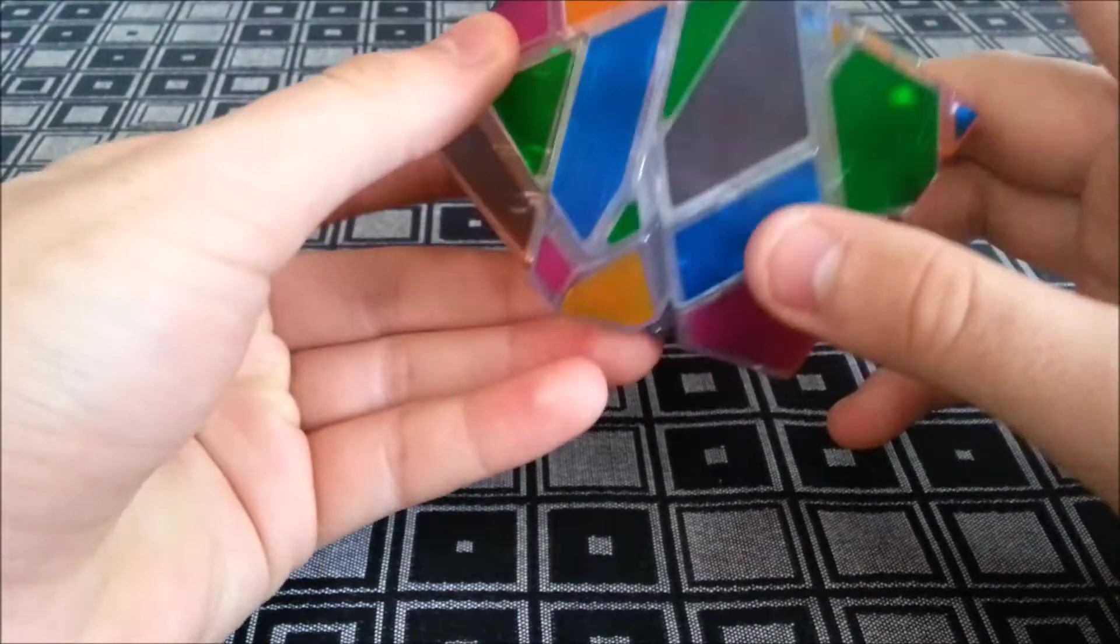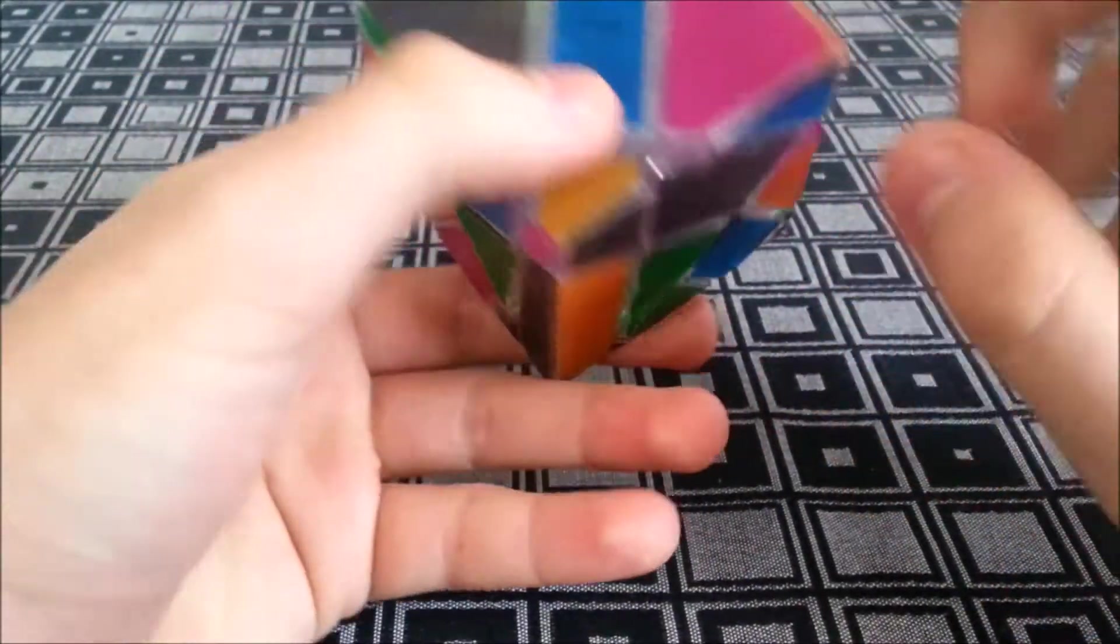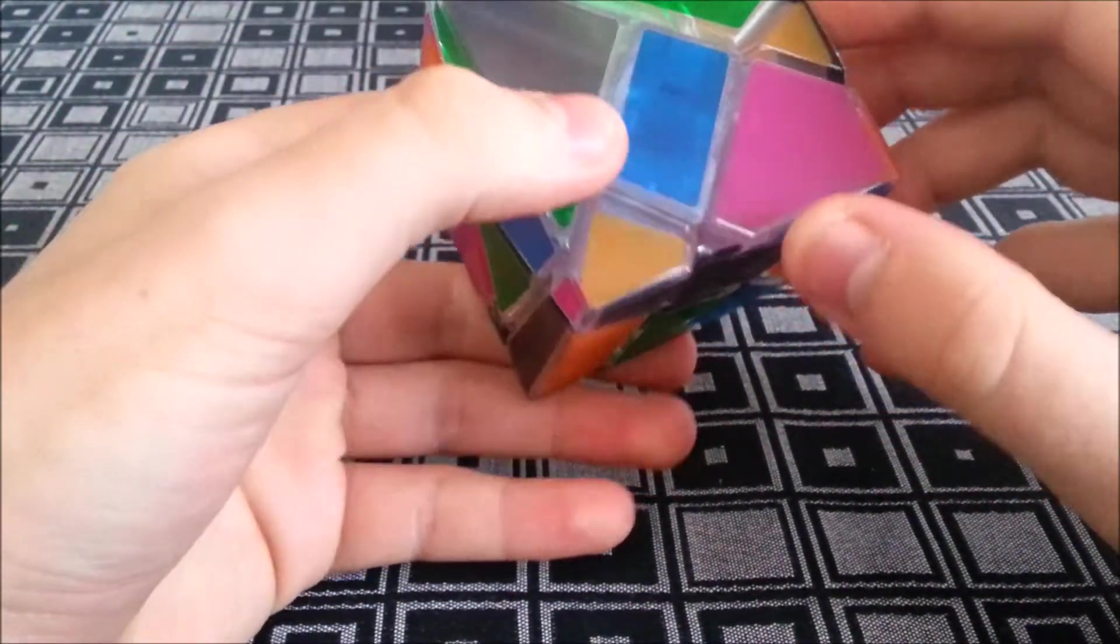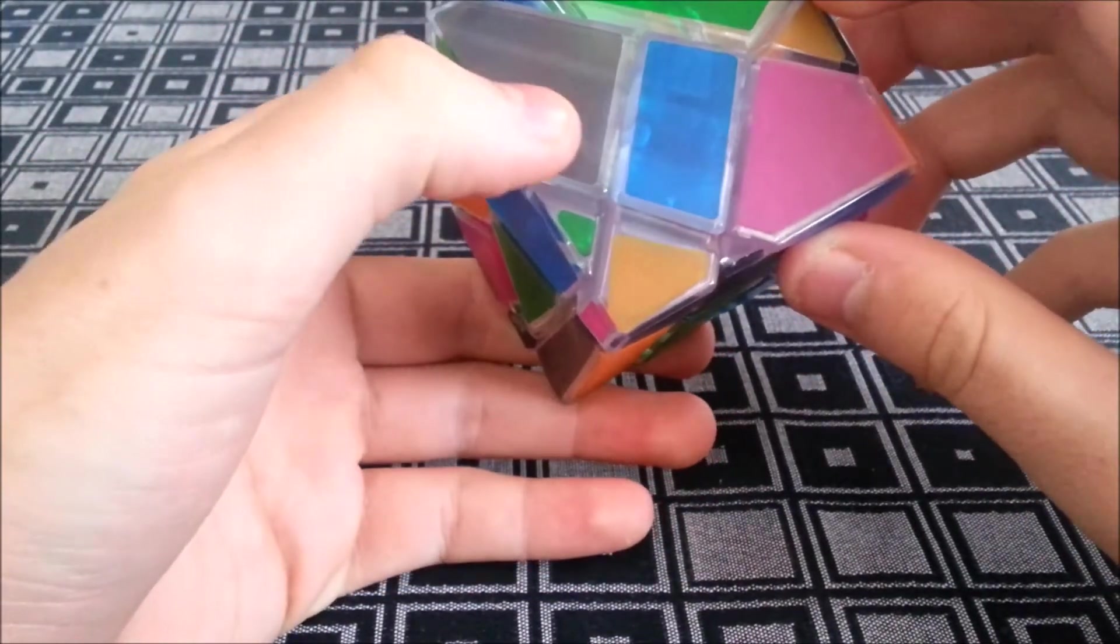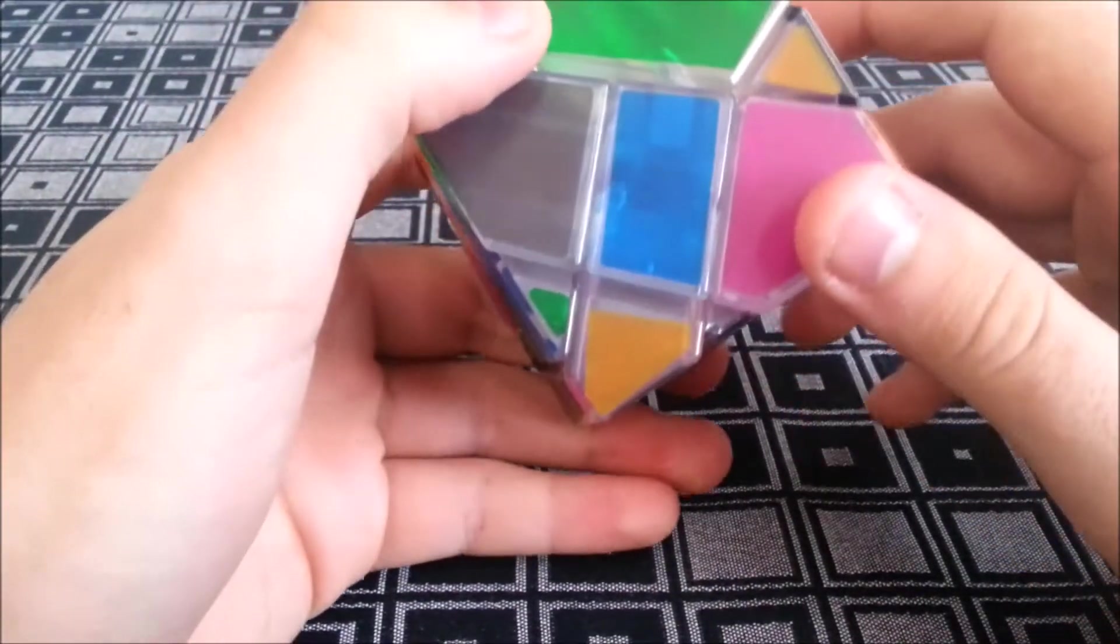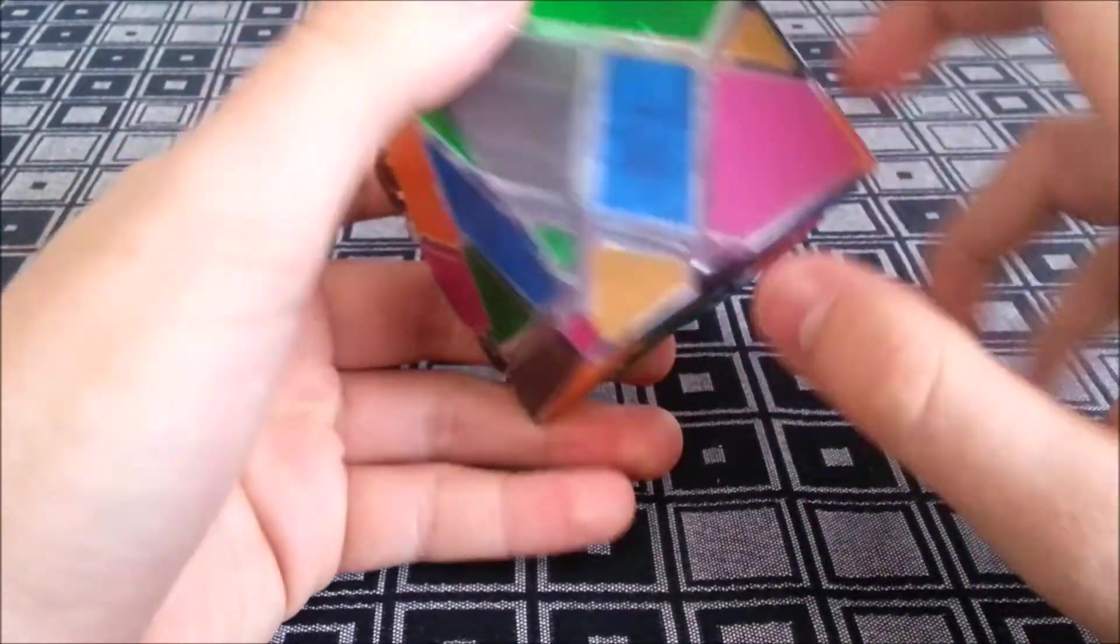When I solve this cube, I solve this bottom layer first, so I know that on either side of this one you have these two wing pieces, is what I kind of think of them as, and I know that the grey one goes on the left and the pink one goes on the right. That helps me differentiate between those two.